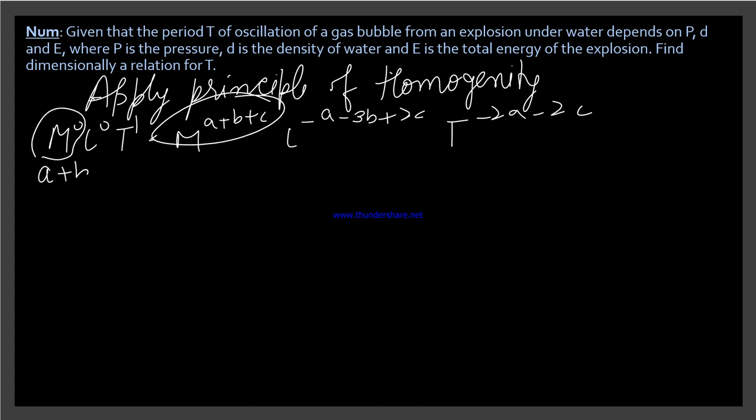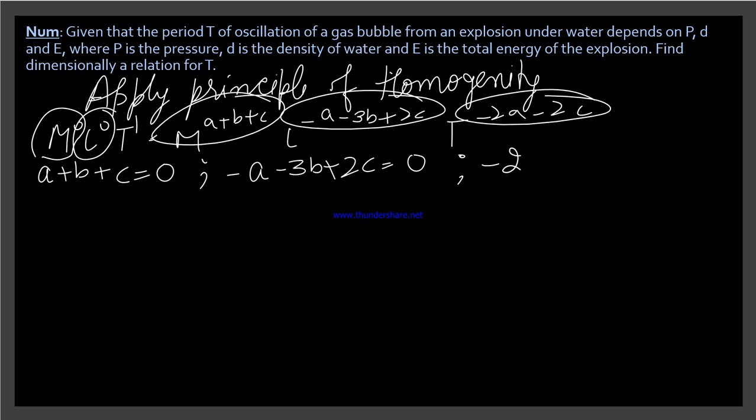So the principle of homogeneity means comparing M's power. This means a plus b plus c equals 0. Here we don't have an answer for a, b, c yet. Then compare L's powers: minus a minus 3b plus 2c equals 0. Then compare the last T term: minus 2a minus 2c equals 1. Take out the common minus from here, you get minus 1. Done.